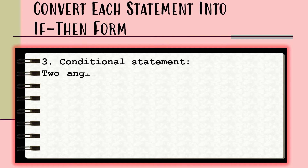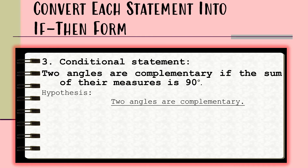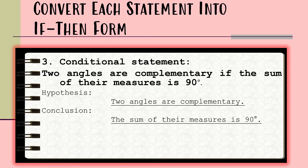Next, we have the statement: 'Two angles are complementary if the sum of their measures is 90 degrees.' The hypothesis of this statement is 'two angles are complementary,' and the conclusion is 'the sum of their measures is 90 degrees.'